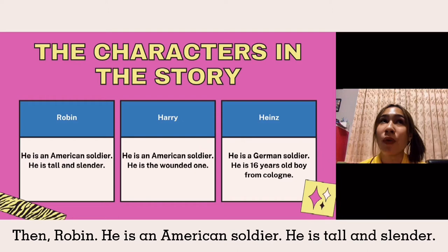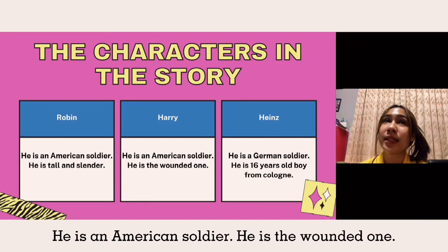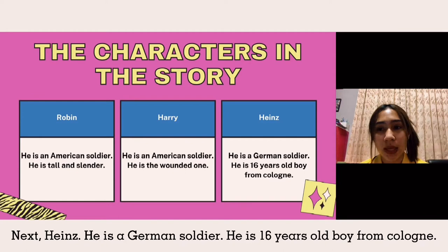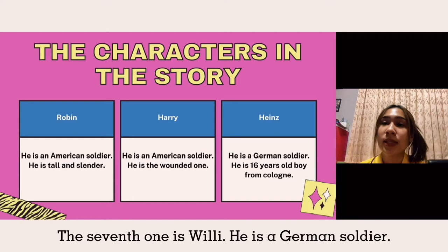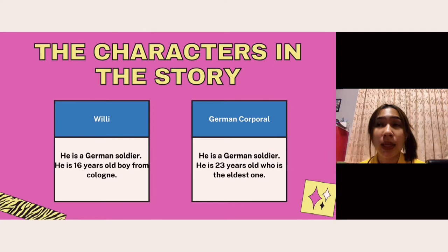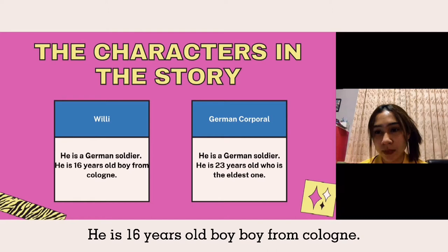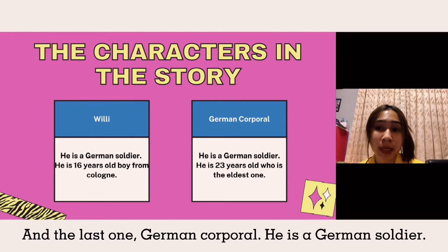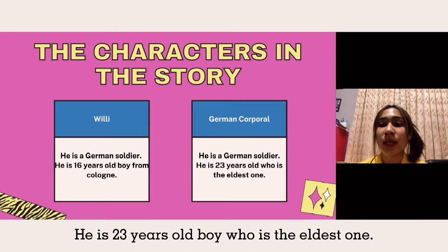The fifth one is Henry. He is an American soldier. He is the oldest one. Next, Heinz. He is a German soldier. He is a 16-year-old boy from Cologne. And the last one, German Coppola. He is a German soldier. He is 23 years old, who is the eldest one.